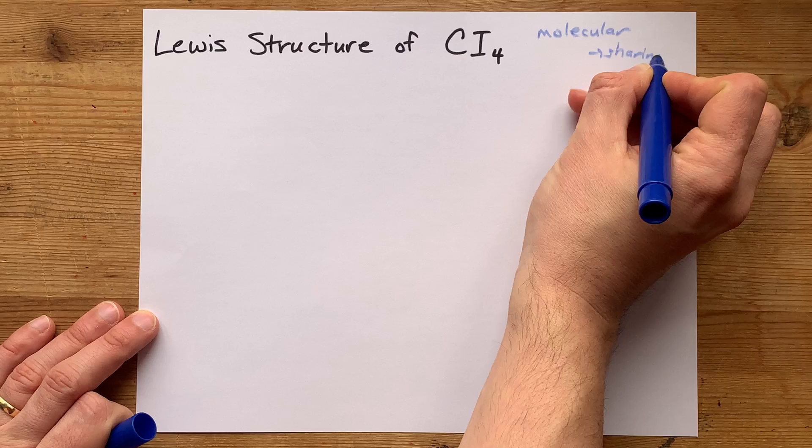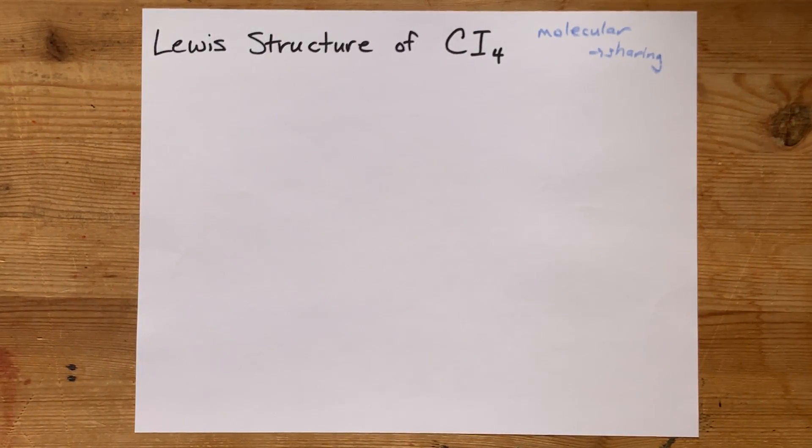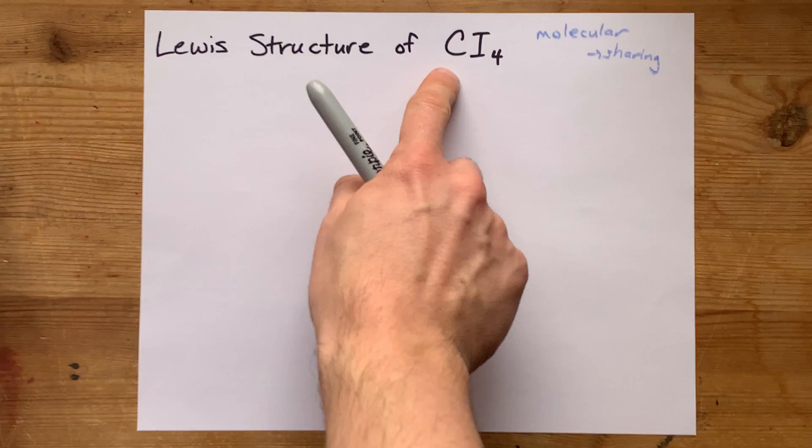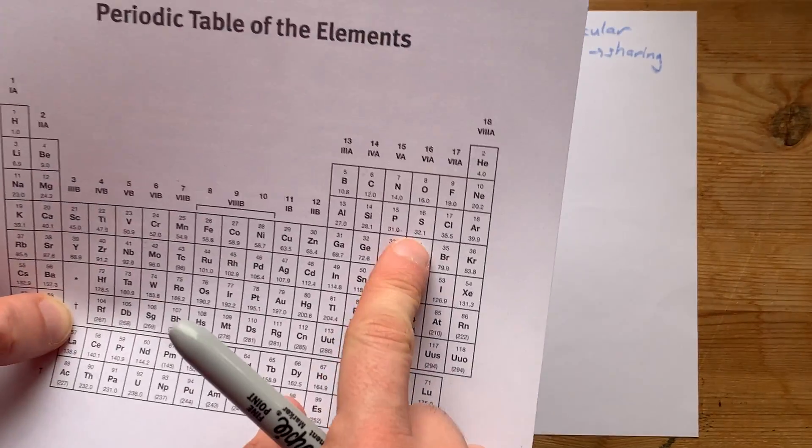You're going to have covalent bonds bonding the carbon to each of the iodines. Now let's see how many electrons we're dealing with.